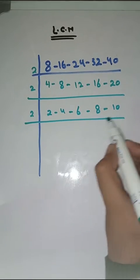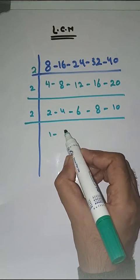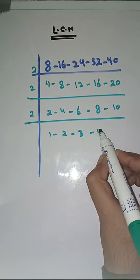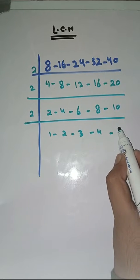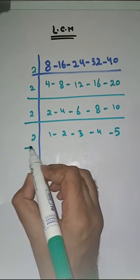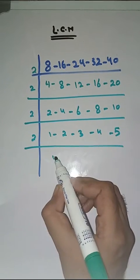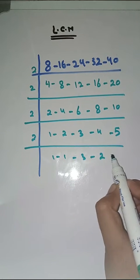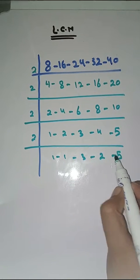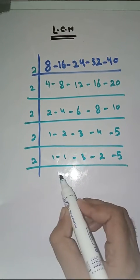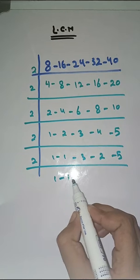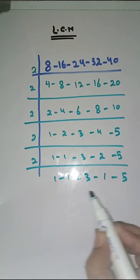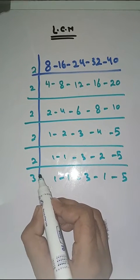Again with 2: 2 1s are 2, 2 2s are 4, 2 3s are 6, 2 4s are 8, 2 5s are 10. Again with 2: 1 as it is, 2 1s are 2, 3 as it is, 2 2s are 4, 5 as it is. Again with 2: 3 as it is, 2 1s are 2, 5 as it is.